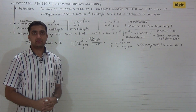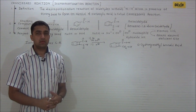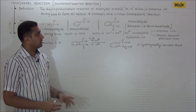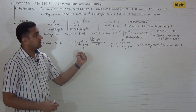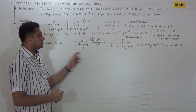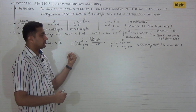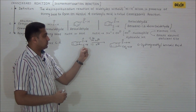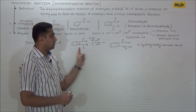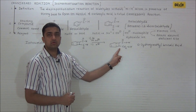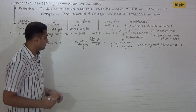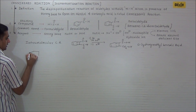Let us discuss intramolecular Cannizzaro reaction. As the name suggests, only one molecule involves in the reaction. Example: phthalaldehyde (in IUPAC system it is called benzene-1,2-dicarbaldehyde). Phthalaldehyde contains two aldehyde groups attached to the benzene ring. In presence of strong base, one aldehyde group undergoes oxidation to a carboxylic group and another aldehyde group undergoes reduction to an alcoholic group.